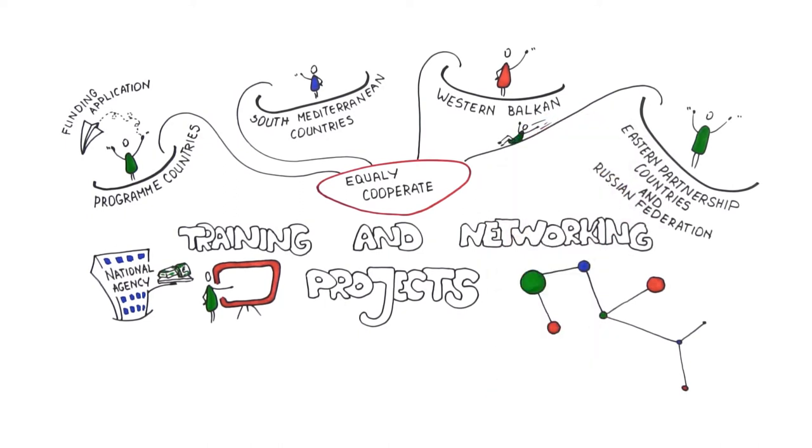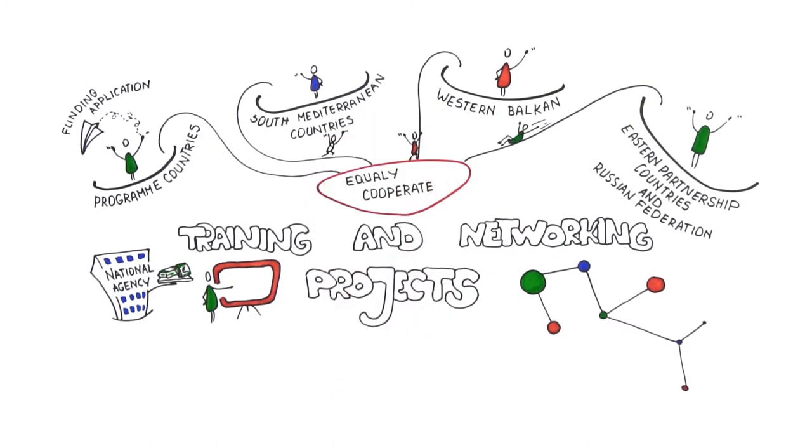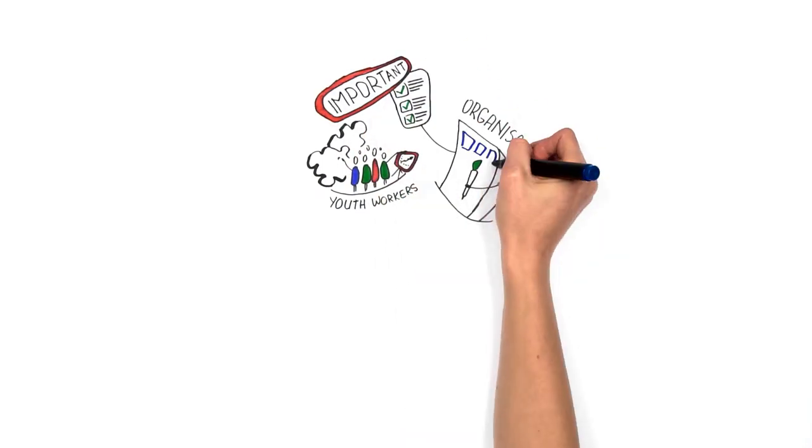Good practice suggests that involving all your partners equally allows projects to contribute to the development of high-quality systems that support young people in all participating countries. The mobility of youth workers is expected to enable their organizations to recognize their important role in the development of civil society.